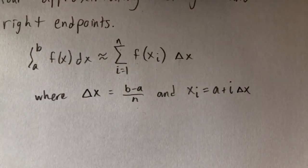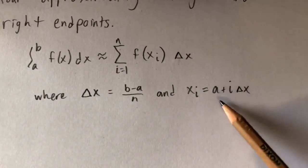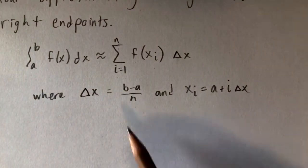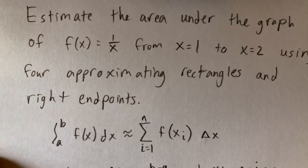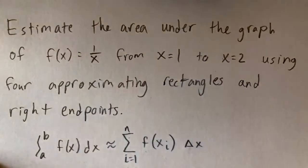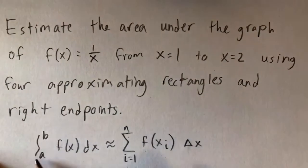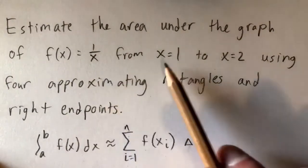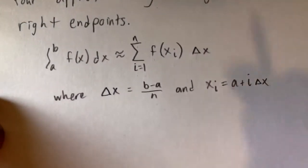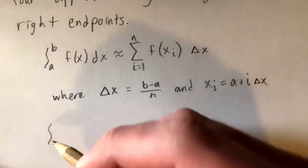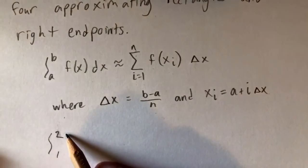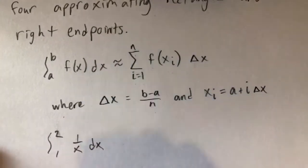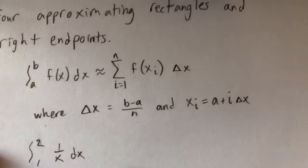And x sub i represents the right endpoints of each of these intervals. So plugging stuff into this formula — we're trying to estimate the area under the graph, which is the same as estimating the integral. The integral represents the area under f of x equals 1 over x, from x equals 1 to x equals 2, with respect to x.